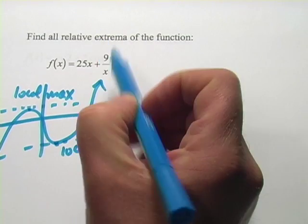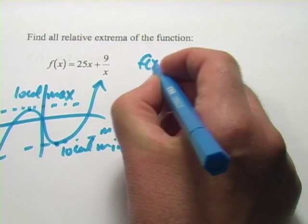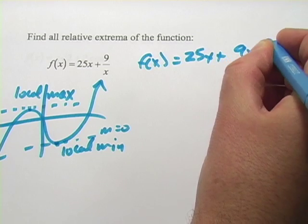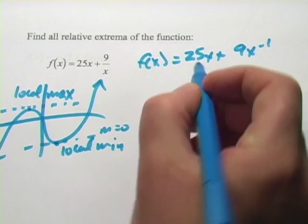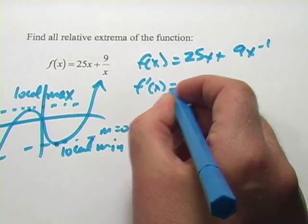So we have the function 25x plus 9 over x. I'm going to rewrite that as 25x plus 9 times x to the negative 1. Same thing. And our derivative will then be, well, this is just 25.